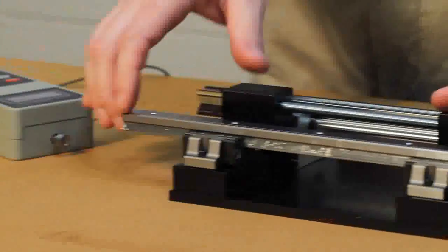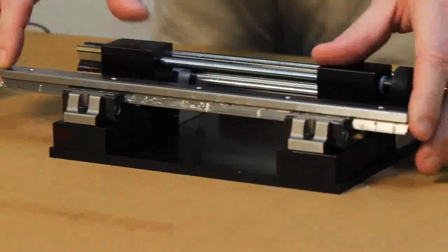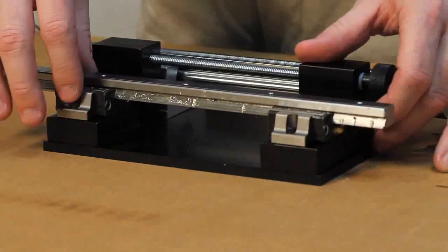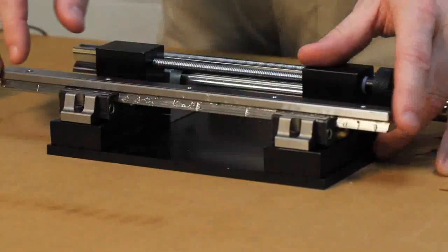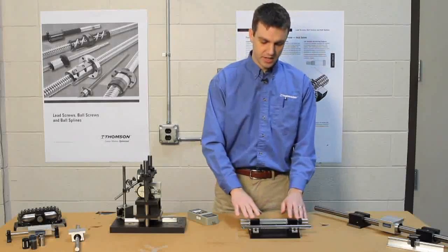So profile rail bearings are not self-aligning, so we usually have a little bit more resistance. Also they're commonly preloaded, which is the case in both of these bearings. So that's in the steady state.